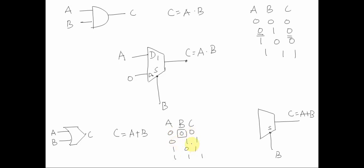If B is 0 and A is 0 the output is 0; if A is 1 the output is 1. So we connect A to D0. If B is 1, irrespective of what A is, the output is always 1, so we connect 1 to D1. This implements a 2-input OR gate using a 2-to-1 MUX.